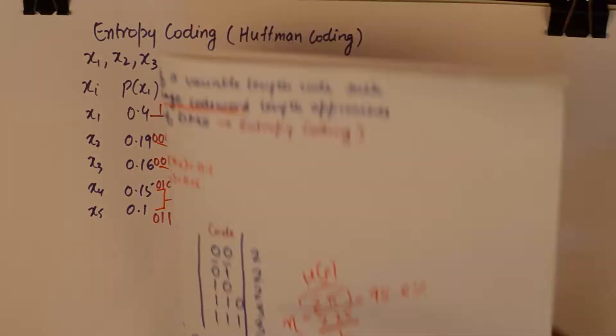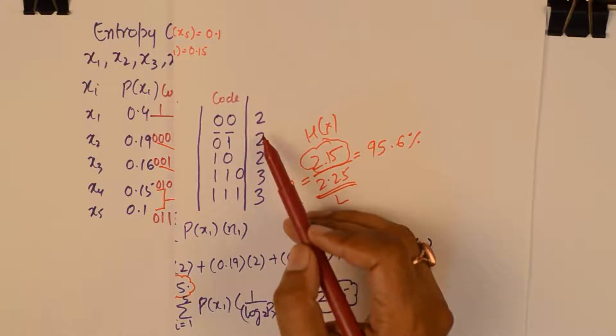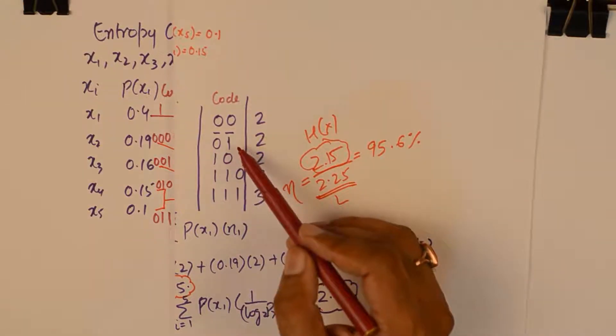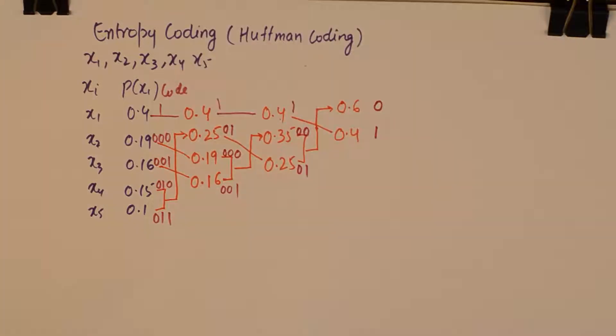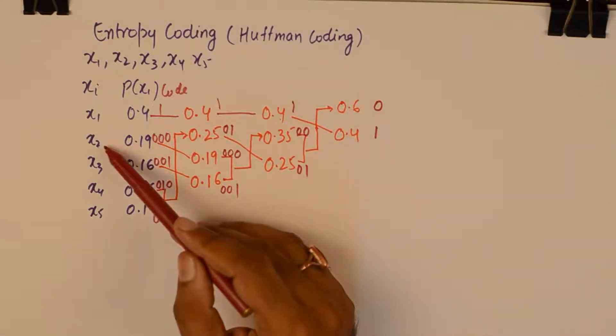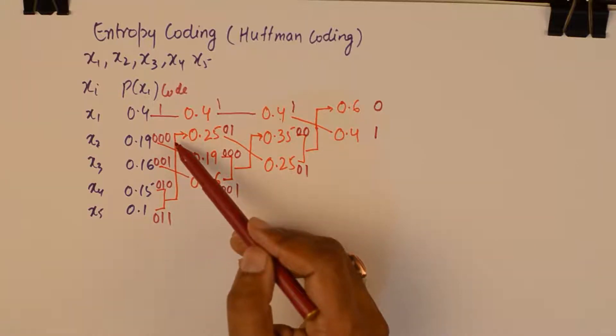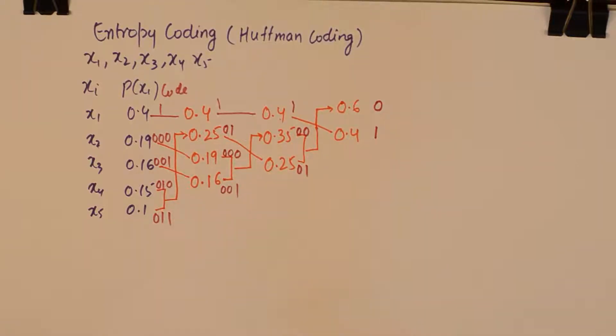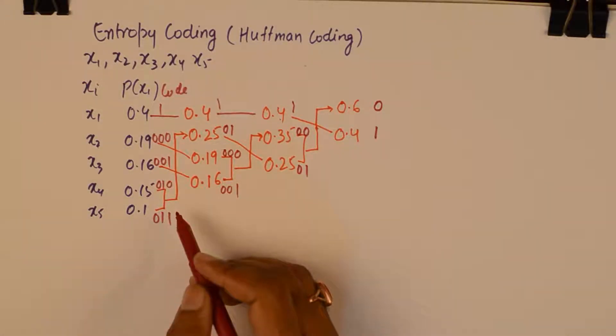In Shannon-Fano the codes were for x1 it was a 2-bit code. For x2 also it was a 2-bit code. But here it is more logical because these probabilities are pretty low. So they should have a higher bit count. So this is in my opinion a more logical approach than the Shannon-Fano coding. And the final code is gotten like this.